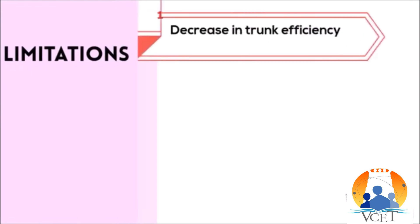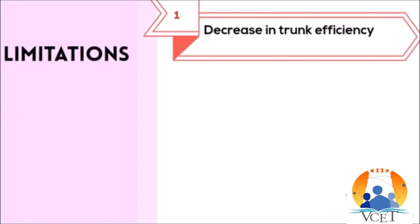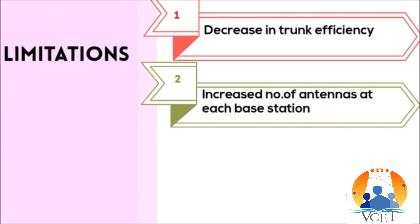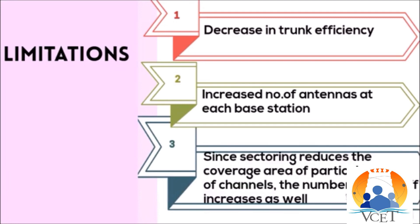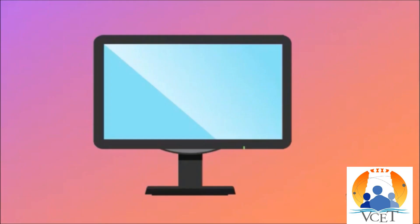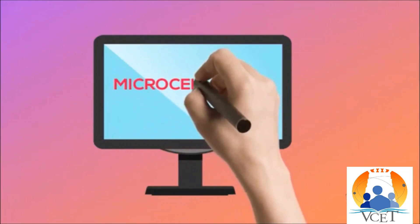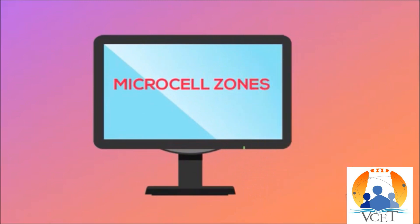Limitations of cell sectoring: it decreases trunking efficiency, increases the number of antennas at each base station, and since sectoring reduces the coverage area per sector, it increases the number of handoffs. We have now covered two concepts: cell splitting and cell sectoring.